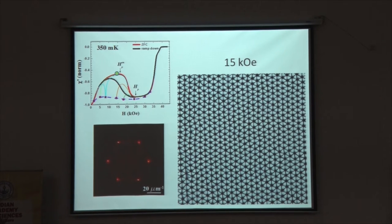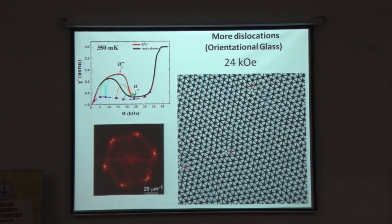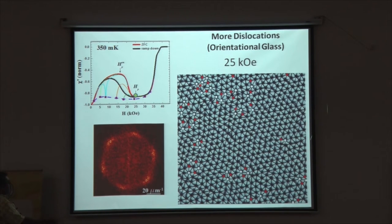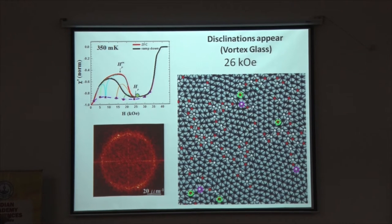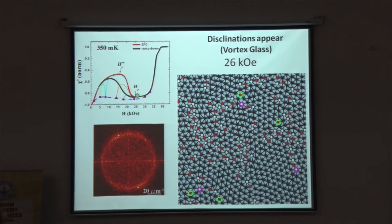I start from this field. I have a well-ordered vortex lattice. This is the Fourier transform with six sharp spots. I increase a little bit here, and then now I start seeing defects in this lattice. These defects are in the form of adjacent sites with five-fold and seven-fold coordination, which is called dislocations. I increase further, I have more dislocations, and then I cross this peak, this dip here, this minima. Now I am right at the minima, I have even more dislocations, but I still have these diffuse six spots.